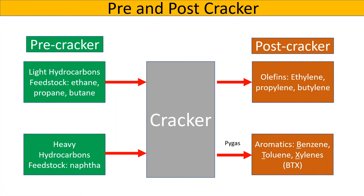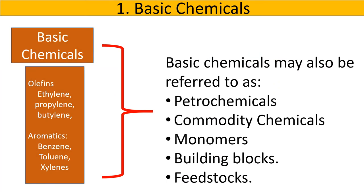Products that come downstream of basic or petrochemicals are called petroderivatives, or simply derivatives, or intermediates. Basic chemicals are usually the first products made in the chemical industry and the start of the value chain. Notice that basic chemicals may be referred to as petrochemicals, commodity chemicals, monomers, building blocks, and feedstock. They are usually produced in high volumes and at a low cost.